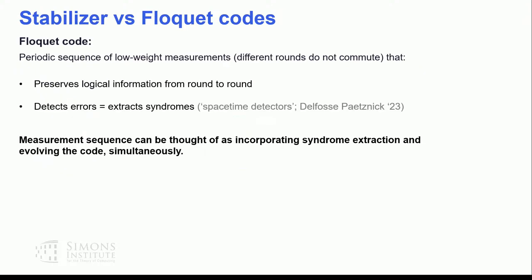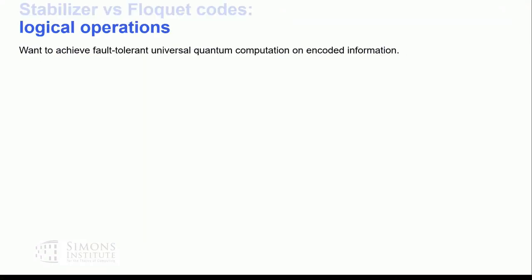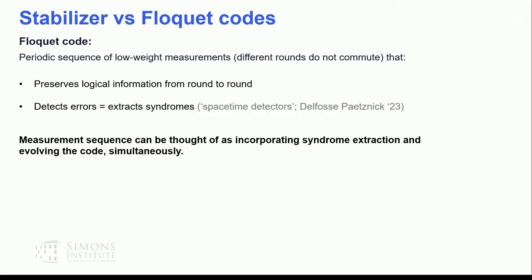This summarizes what a general Floquet code is, even though there does not exist a rigorous definition. What we want a Floquet code to be is a sequence of low-weight measurements that could anticommute between different rounds, that preserves logical information, but also corrects errors. This measurement sequence defines the Floquet code and is responsible for pushing information forward in time and also extracting information about errors.